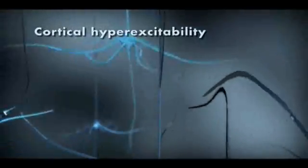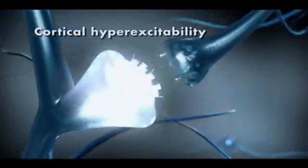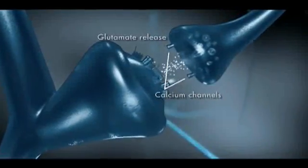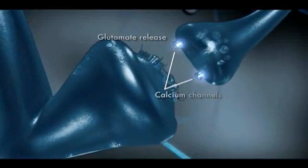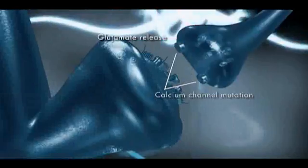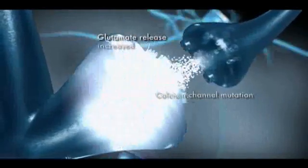Individuals susceptible to migraine are hypothesized to have a hyperexcitability of the cerebral cortex. In those with a very rare inherited form of migraine, it is thought that molecular changes in calcium channels result in more release of glutamate at synapses between neurons.